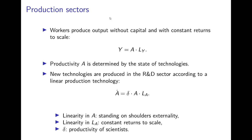Workers produce output with constant returns to scale. Output is a function of labor input L_Y — the number of workers in the final goods sector — and A, the productivity of these workers, which is determined by the state of technologies. New technologies are produced in the R&D sector with a linear production technology. The flow of new ideas — the time derivative of the stock of technologies — is a positive function of the number of scientists L_A. More researchers means a higher flow of ideas. Delta is the productivity of scientists: if they are better trained and educated, they are more productive and can come up with more ideas.